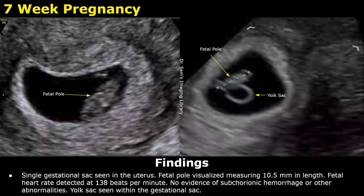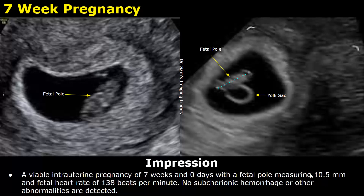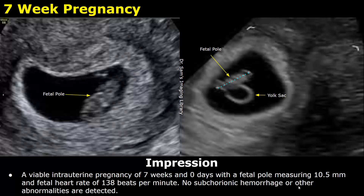Here is a 7-week pregnancy. In the findings, you can write the single gestational sac seen in the uterus, then the size of the fetal pole or embryo, and then you can write the fetal heart rate, which in this case was 138 beats per minute, and there was no evidence of subchorionic hemorrhage or other abnormalities. The yolk sac is seen within the gestational sac. The impression: a viable intrauterine pregnancy of 7 weeks and 0 days with a fetal pole measuring 10.5 millimeters and a fetal heart rate of 138 beats per minute. No subchorionic hemorrhage or other abnormalities are detected.